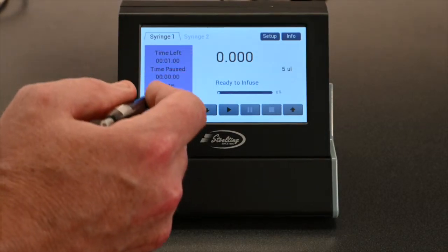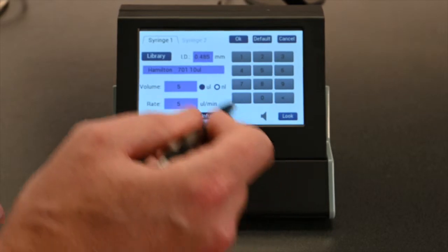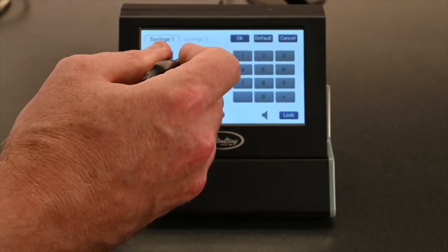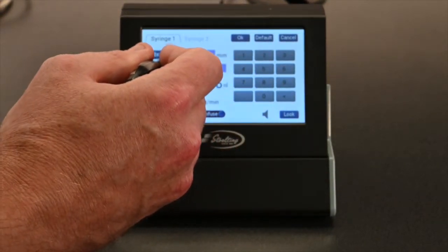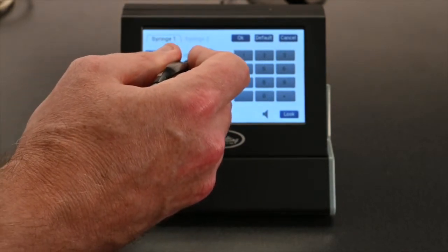So to change these features, it's quite simple. You go into setup. And here you start, we'll start here with the ID. The ID is the inner diameter of the syringe. So whatever syringe you're using, you can manually type it in.